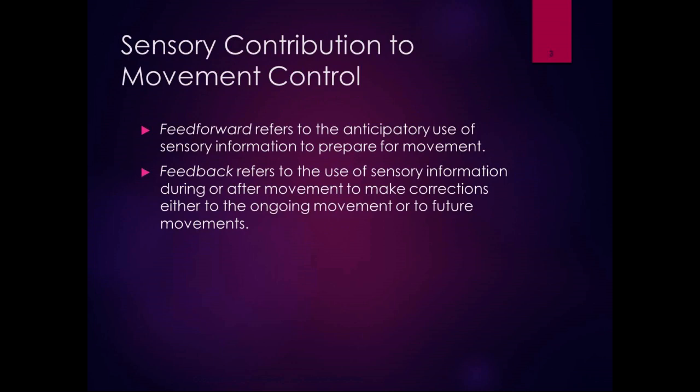Peripheral information from the somatosensory system comes in, goes to the spinal cord, then to the brain. The brain decides if a motor act is needed, and then signals go out through the motor tracts down to the lower motor neurons to produce movement. Feed forward refers to the anticipatory use of sensory information to prepare for movement — like knowing where your arm is in space to move the racket to hit a tennis ball. Feedback refers to using sensory information during or after movement to make corrections to the ongoing movement or to future movements.